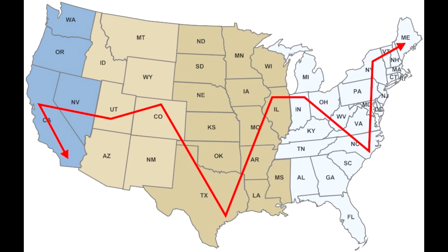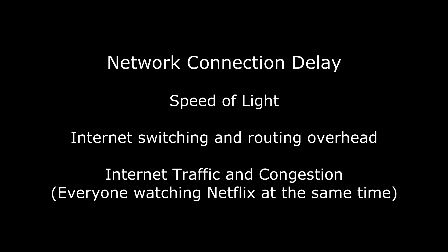However, the actual route the data takes from San Diego to Maine and back may be anything but a straight line. Because of internet routing, the actual distance the packets travel could be twice the physical distance or more, adding additional delay just because of the speed of light. On top of distance and speed-of-light issues, there may be additional delay added from internet switching overhead, buffering, traffic congestion, quality of service prioritization, and other factors.